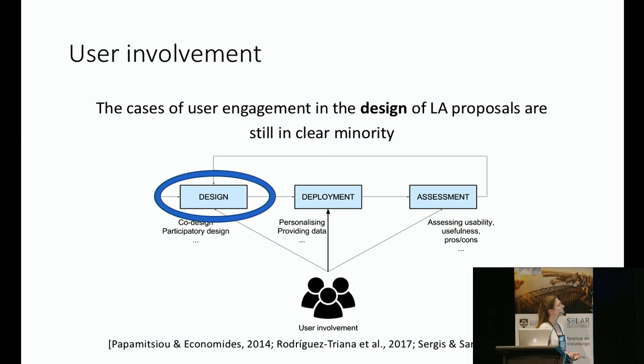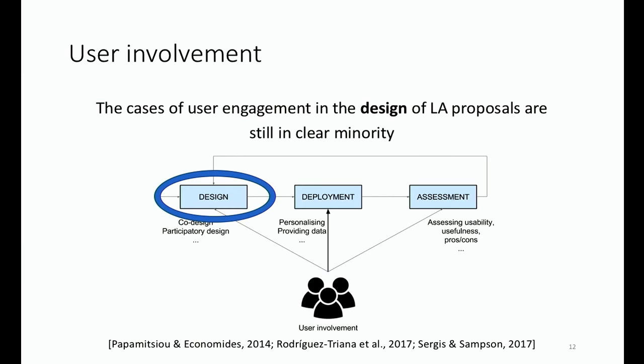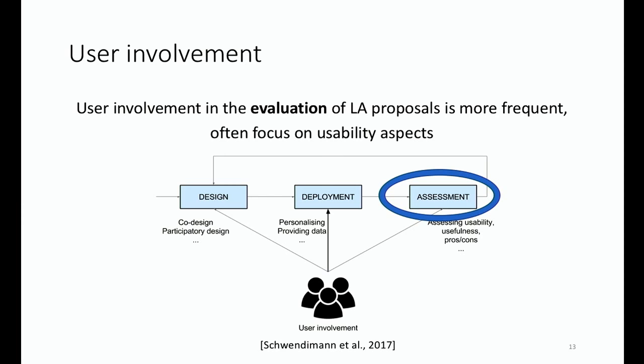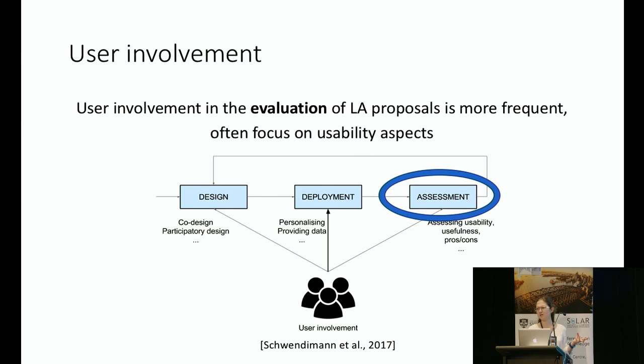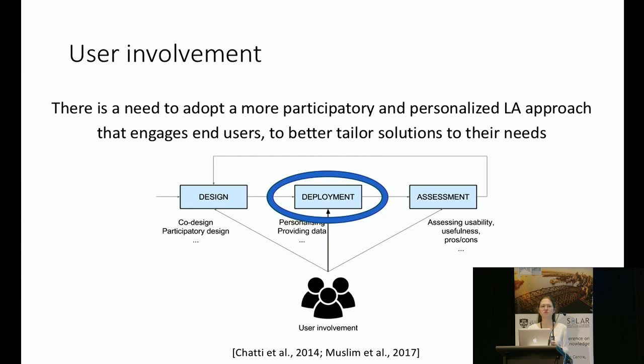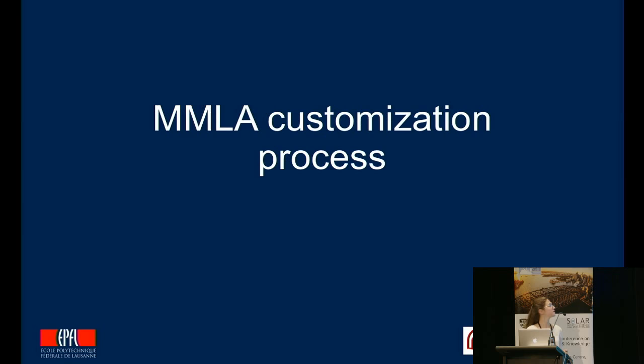There are already a number of studies in the literature. Recent literature reviews say that co-design and participatory design are well-regarded, and we've had sessions about user involvement this week. There are also quite a number of people putting final users in the assessment phase, focusing on usability. But what happens with development? If we also put users in that side so they can specify what they want, we could better tailor their needs.